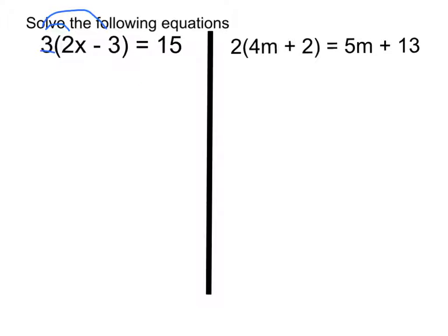So for the first question, we're going to get 3 times 2x becomes 6x. Remember times the 3 and the 2, take away 3 times 3 is 9. So it becomes 6x minus 9 is equal to 15. Now we get an equation like some of the simpler ones we've seen before.